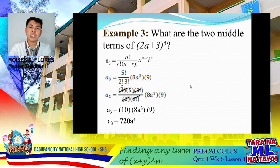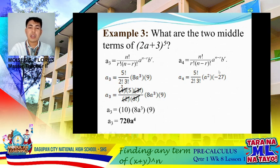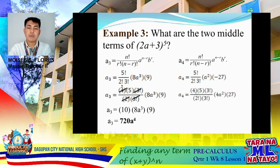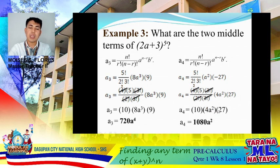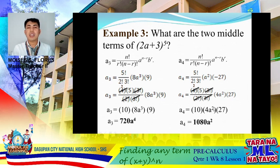For the fourth term: using the same formula with n equals 5 and r equals 3, we have 5 factorial over 2 factorial times 3 factorial, times (2a) squared, times 3 raised to 3 which is 27. Simplifying: 5 times 4 times 3 factorial — cancel 3 factorial — and 4 divided by 2 leaves 2. Multiplying: 2 times 5 times 4 times 27 gives the fourth term as 1080 a squared.